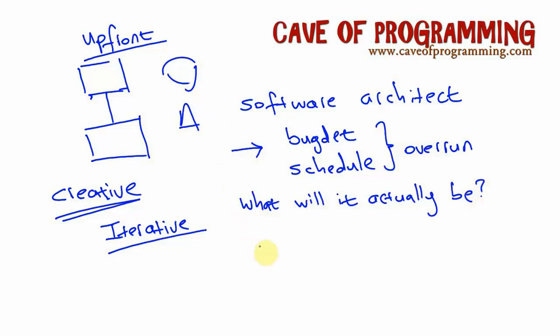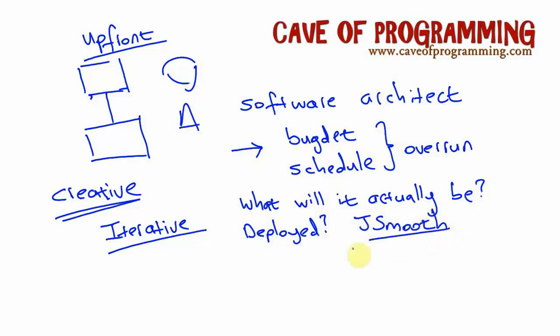You've also got to think about how the software is going to be deployed, because if you just write some software and then find you've got no clear way of deploying it, you'll again overrun your budget or your schedule. You have to think about installers. With Java, we have Java Web Start, which is a really good way to deploy Java programs. But if you want the Java program to be something you can give to people on a CD, you need to think how you're going to get it onto the CD. Will a runnable jar do the trick? Can you use something like J Smooth to create a runnable executable? Or do you need to write an installer? If you need to write an installer, you have to be aware that's going to be a substantial task with a big learning curve in itself.